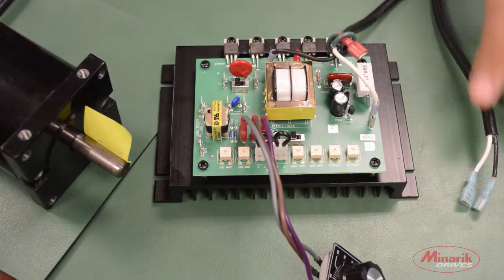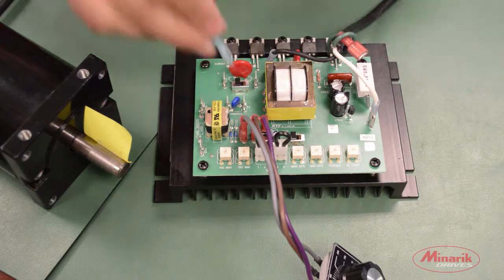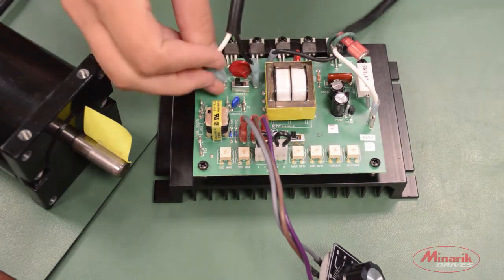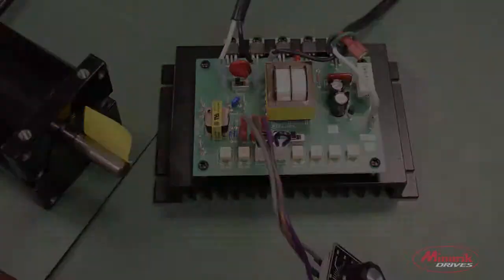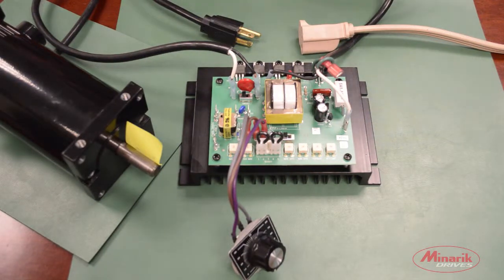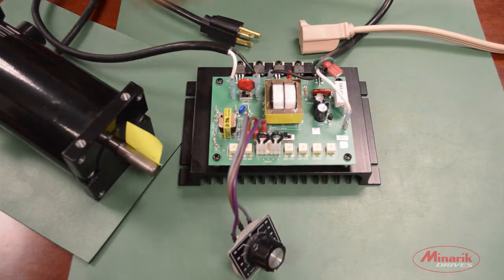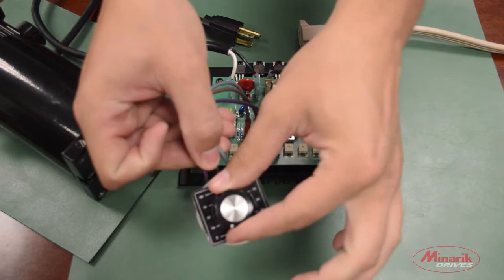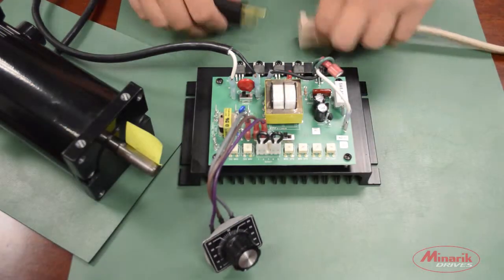Next, we'll connect our power leads to the drive to terminals L2 and L1. Now that we've made sure everything is wired properly and we've turned our main speed potentiometer down to 0, it's okay to apply power to the drive.